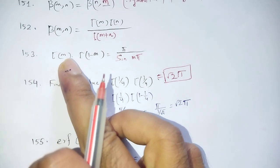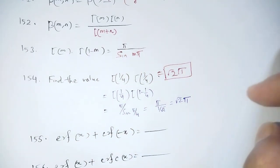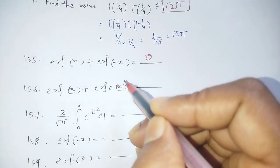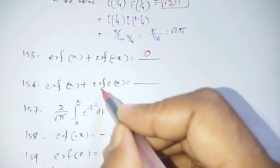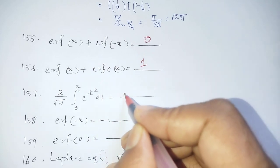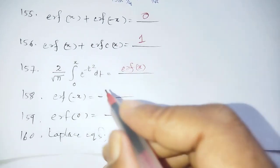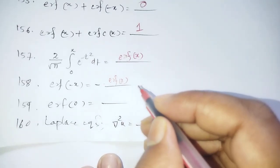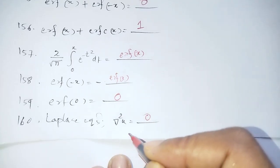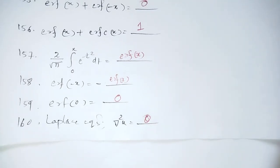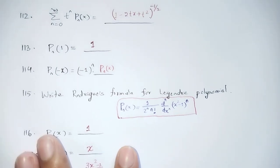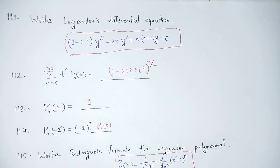The property used: Γ(m)·Γ(1-m) = π/sin(mπ). Regarding the error function: erf(x) + erf(-x) = 0, and erf(x) + erfc(x) = 1. The definition is erf(x) = (2/√π)·∫₀ˣ e^(-t²) dt.